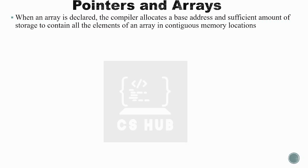An array is a contiguous collection of homogeneous elements under a single name. The array occupies continuous memory locations. When an array is declared, the compiler allocates a base address and sufficient storage to contain all the elements of the array in contiguous memory locations.